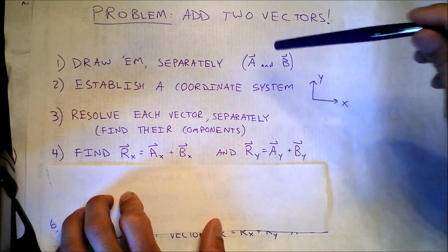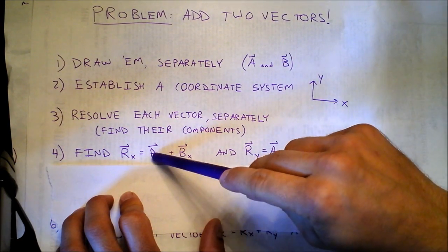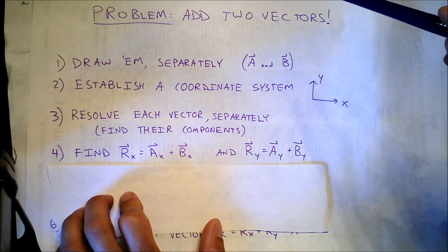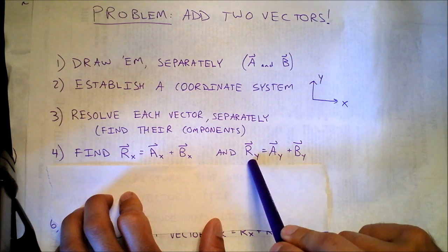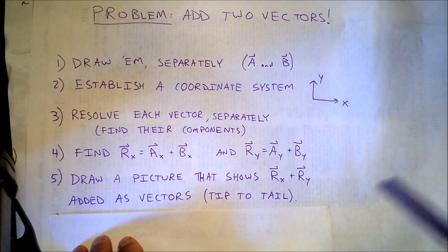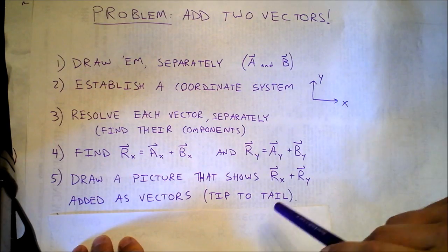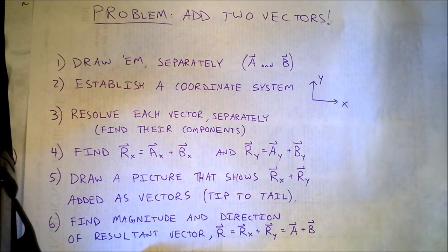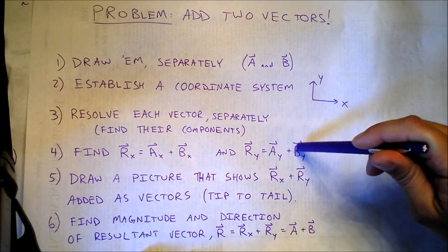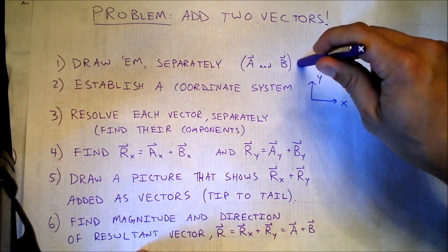Then you find A_x plus B_x, which gives the total amount to the right that vector R is — R being what we get when we add A plus B. We also want to find R_y, which is the sum of the two y components, A_y and B_y. The fifth step is to draw a picture showing R_x and R_y added tip to tail, then find the magnitude and direction of the resultant vector R.